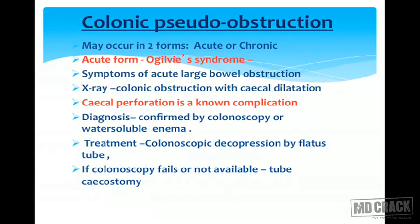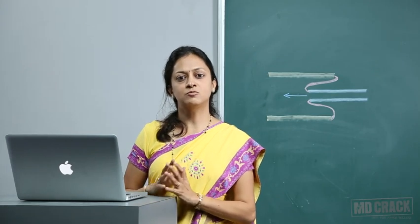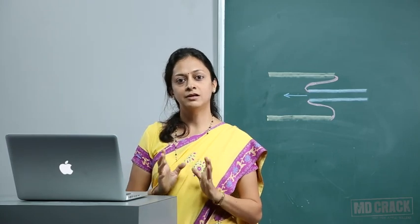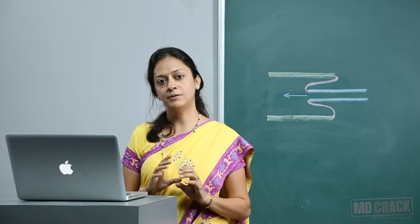Colonic pseudo-obstruction may occur in two forms, acute or chronic. The acute form is also called Ogilvie's syndrome. Symptoms are the same as acute large bowel obstruction. X-ray will show obstruction and cecal dilatation. Cecal perforation is a known complication — in Ogilvie's syndrome, cecal perforation is commonly seen because the cecum will be dilated and finally perforated.